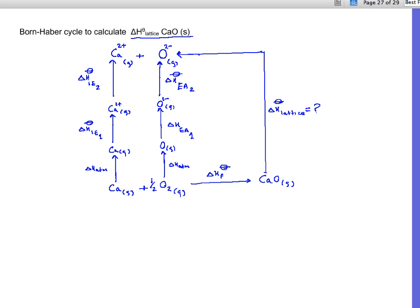Now let's just, the rest of the values are given. Delta H lattice is not. Formation of calcium oxide is minus 635. First atomization of calcium is 178 positive. First ionization energy of calcium 590 positive endo. Second ionization energy is 1150 endo.